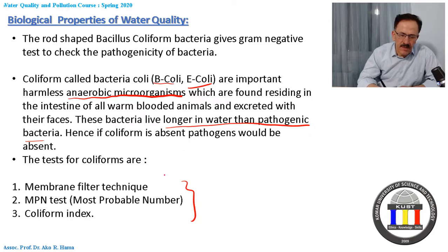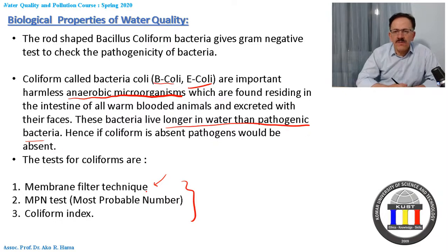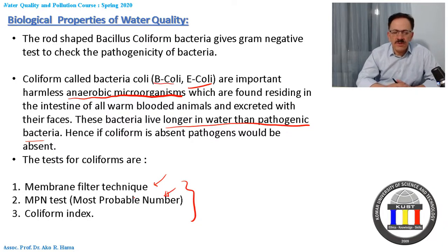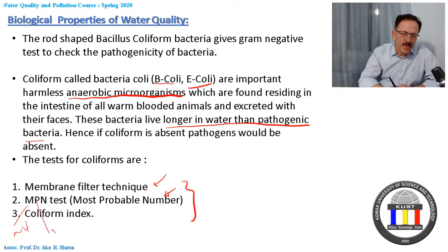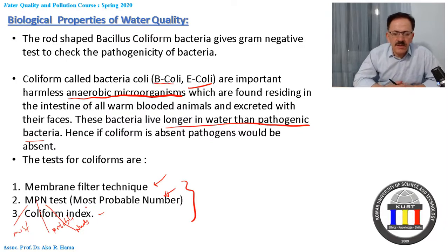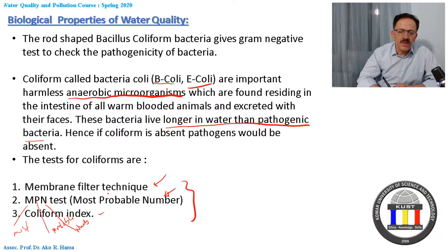The first method is the membrane filter technique, used to measure coliform levels. Through coliform counts, we know pathogen density — more coliforms means more pathogens in the water. Another method, nowadays most commonly used, is called the Most Probable Number (MPN). The third method is called the coliform index.